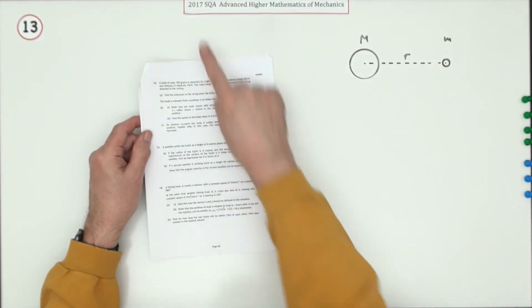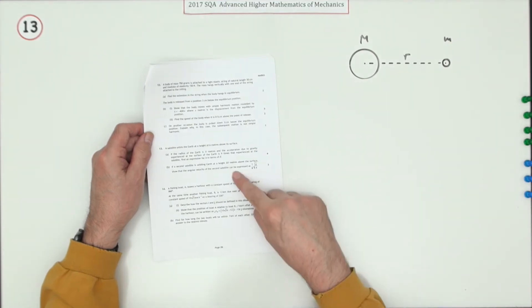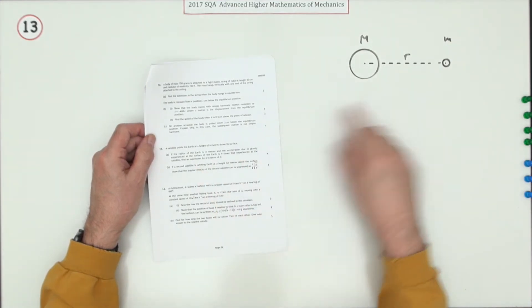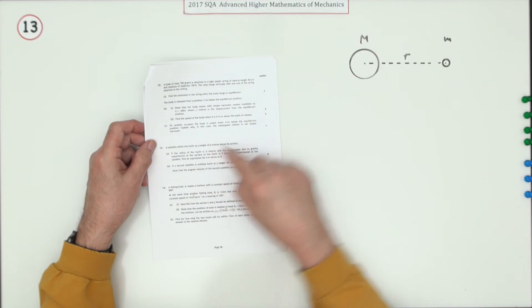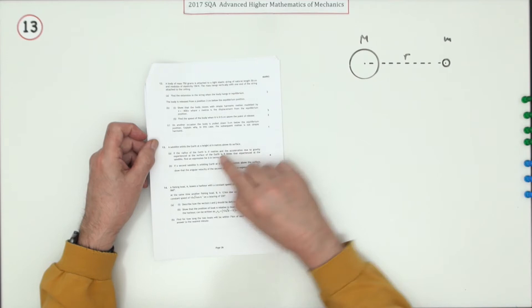Number 13 from the 2017 Mathematics and Mechanics seven mark question. This time it's actually a very straightforward question. A satellite orbits the earth at height of h meters above its surface. Part A: if the radius of the earth is capital R meters and the acceleration due to gravity at the surface is nine times that experienced by the satellite, express h in terms of r.